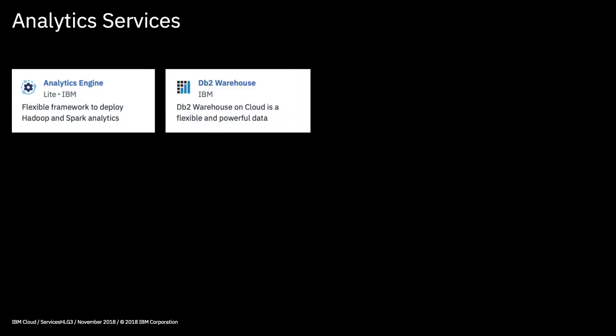Beginning with analytics. The Analytics Engine service lets you develop and deploy analytics applications using Apache Spark and Apache Hadoop, and with this service you're basically spinning up a powerful virtual server environment to do just that. Next we have DB2 Warehouse, which is a fully managed cloud-based data warehouse service that is based on IBM's DB2 database. You'll see this in the database part of the catalogue as well.